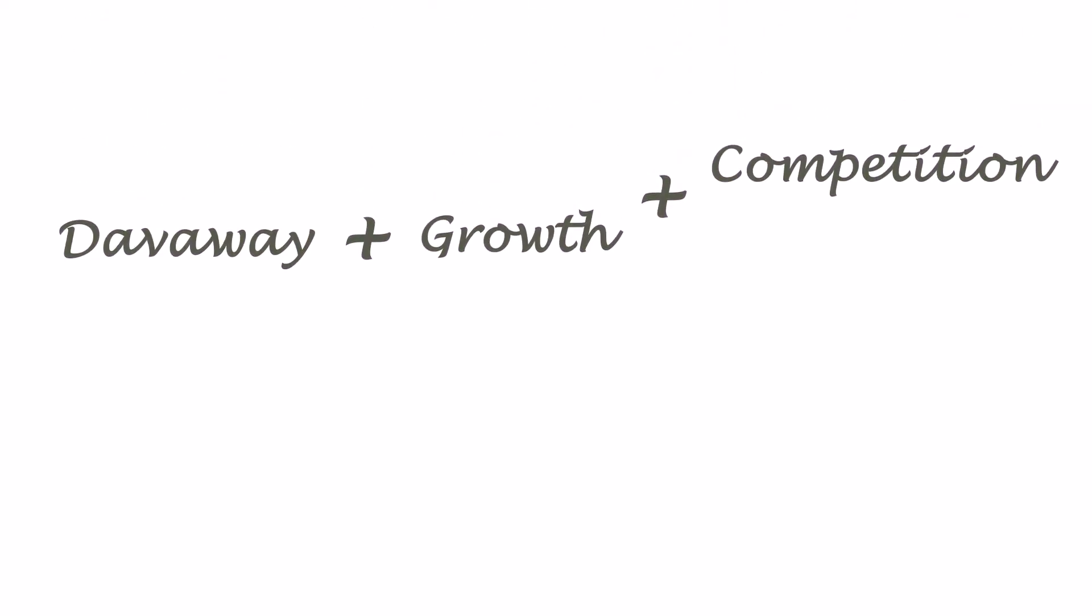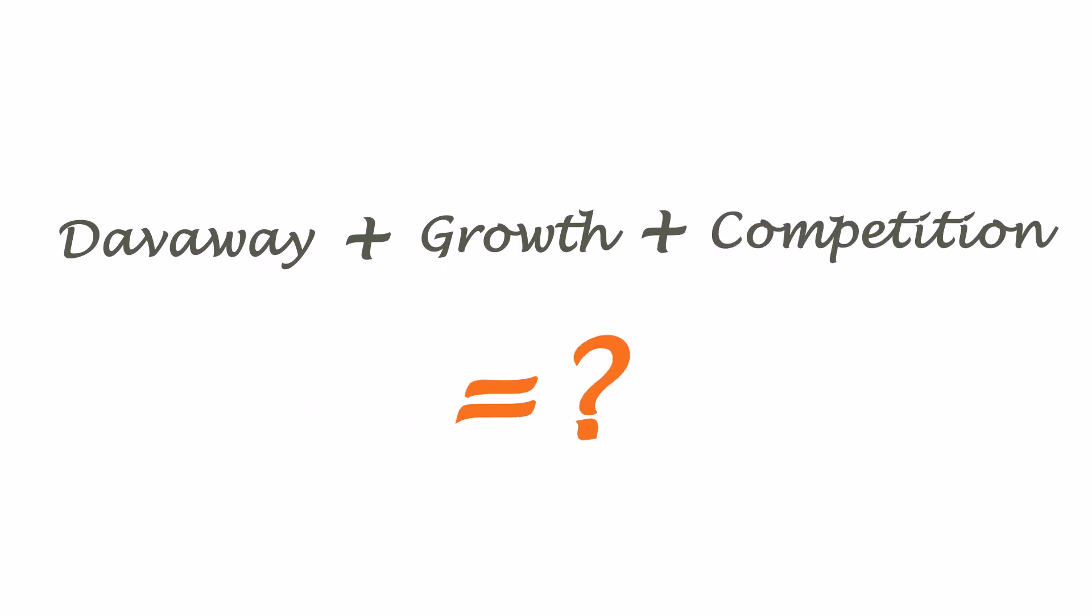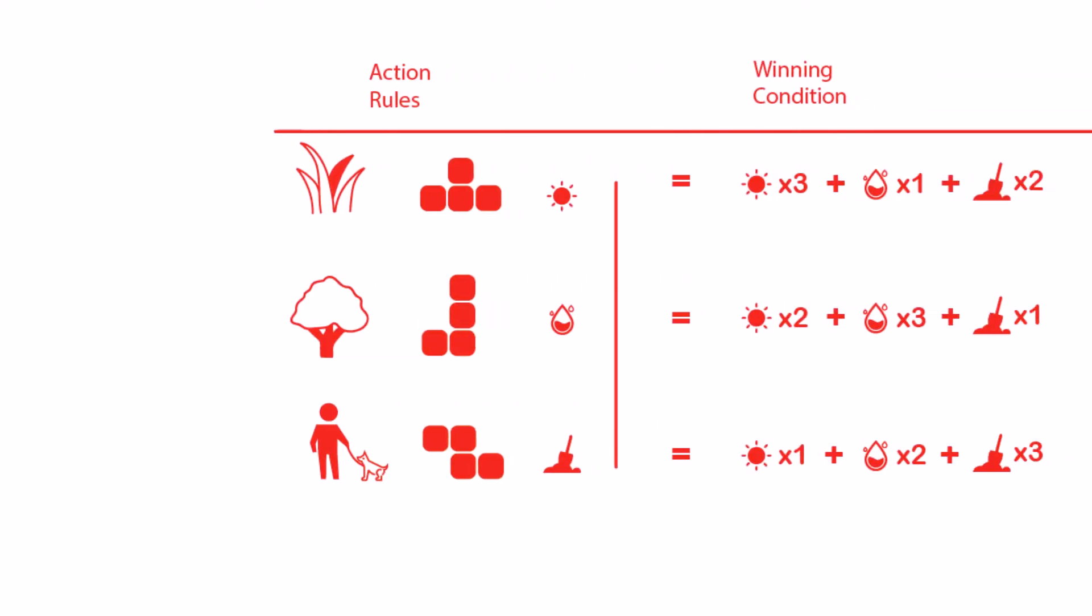Looking for a way to illustrate the competition between the actors and the factors, we came up with a game. In this game, players can choose to play with three different actors, either trees, grass, or humans.